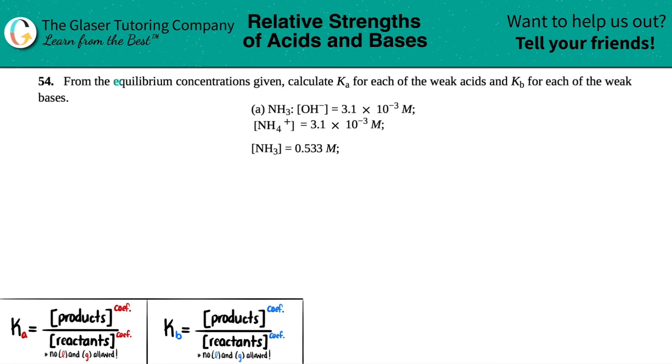Problem 54: From the equilibrium concentrations given, calculate Ka for each of the weak acids and Kb for each of the weak bases. For part A, we have ammonia, NH3.